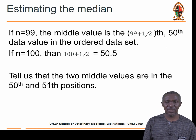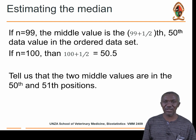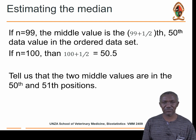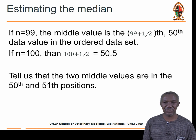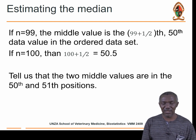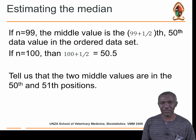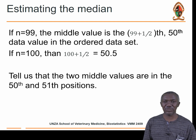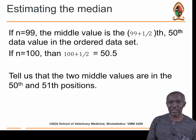If N is even, say 100 observations, (100+1)/2 = 50.5, meaning the middle number lies between the 50th and 51st positions. So you take the average of those two values. That is how we determine which one is the median.